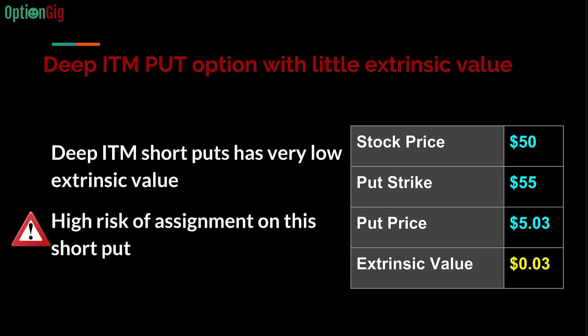Here's an example of a deep in-the-money put with little extrinsic value. The stock price is $50, the put strike is $55, and today the put is trading at $5.03. That means the extrinsic value is only $0.03. Since the extrinsic value is so low, the seller of this put is at high risk of early assignment — the buyer only loses 3 cents of extrinsic value by exercising and may be comfortable doing so.